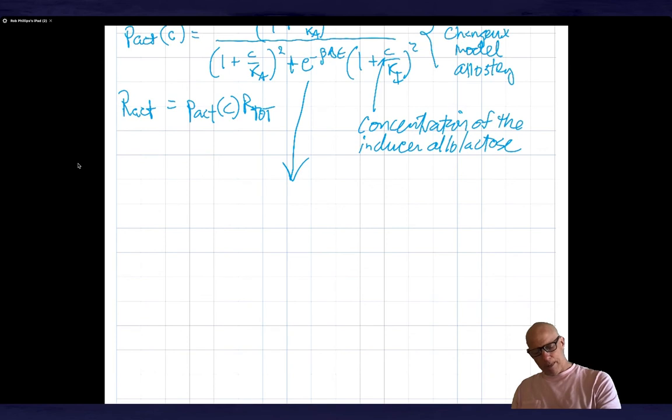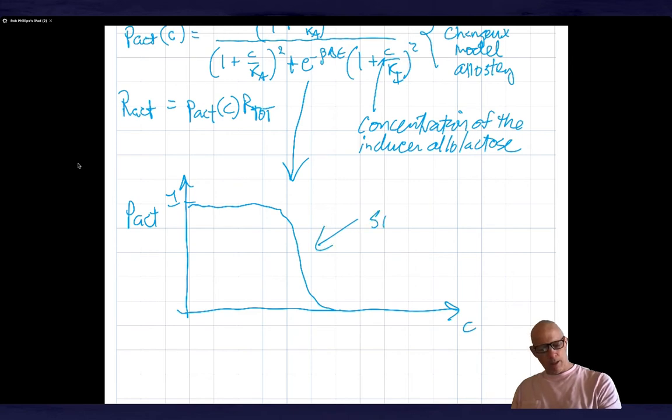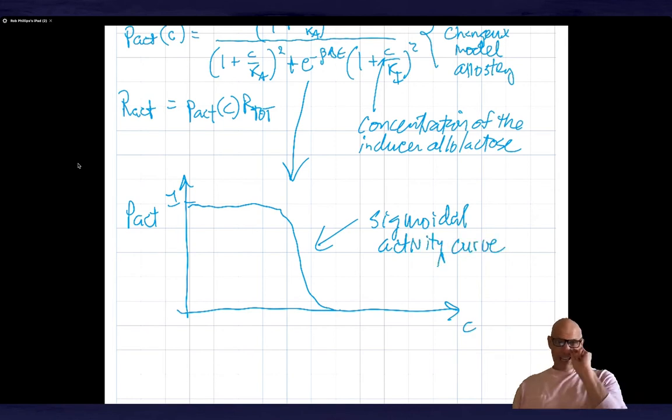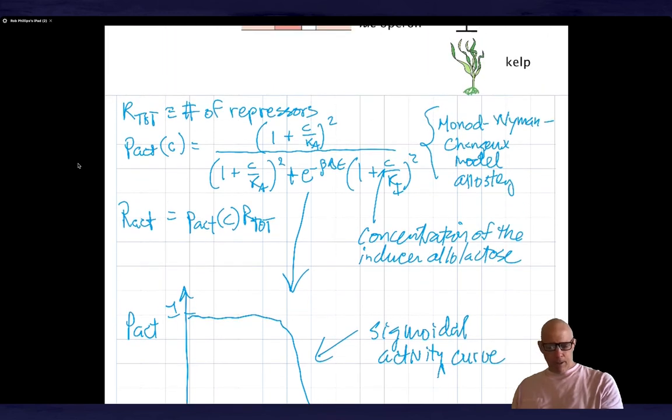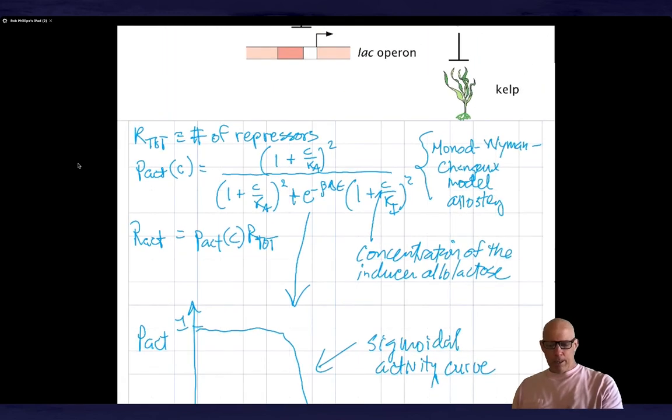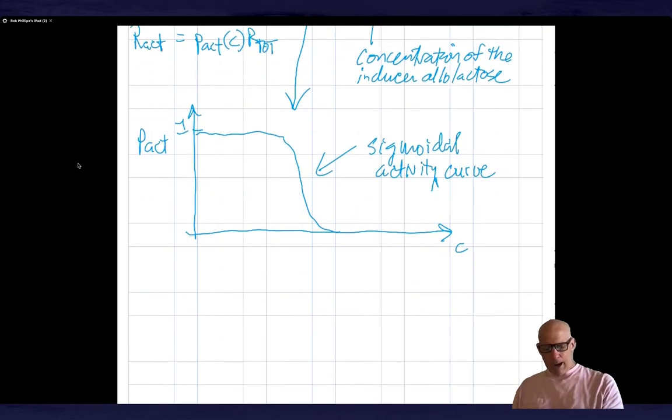This equation gives rise to a sigmoidal activity curve. Here's one - this thing is going to do something like this, a sigmoidal activity curve. I will explain where this equation comes from later, but this is to my mind a much better realization of cooperativity for many biological situations than the convenient but phenomenological Hill function.